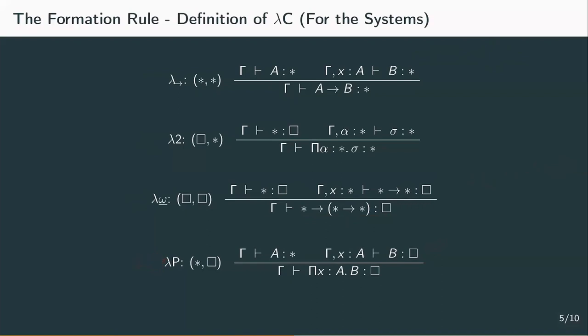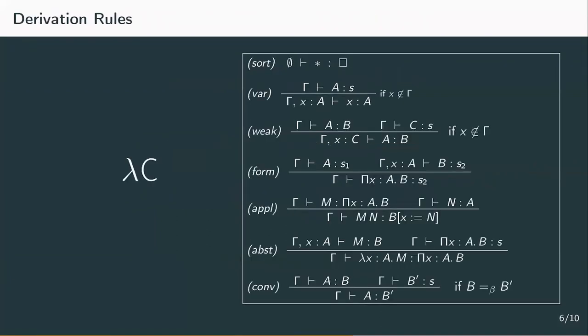So to get back to the calculus of construction, we achieve its derivation rules by taking the rules from lambda P and changing the form rule as discussed. And we even get more than these derivation rules. They make it possible to define all systems of the lambda cube uniformly. We just discussed that we can enable the different dependencies by inserting the corresponding sort pair into the formation rule. And this is sufficient to make the derivation rules, as they are displayed here, into derivation rules for each of the systems. This is quite easy to see for lambda P, of course, since we would get exactly its rules by changing the formation rule.